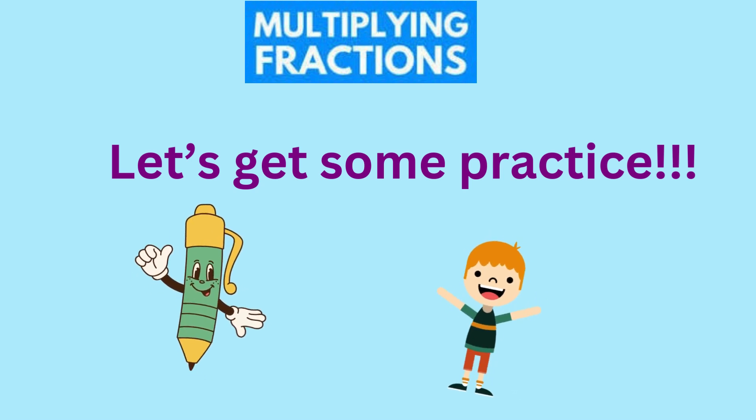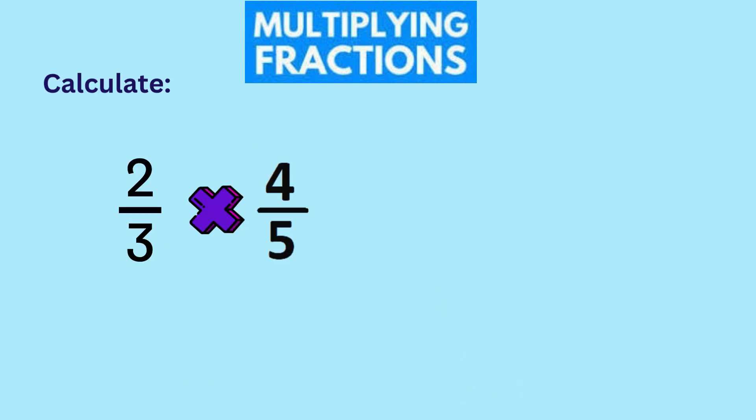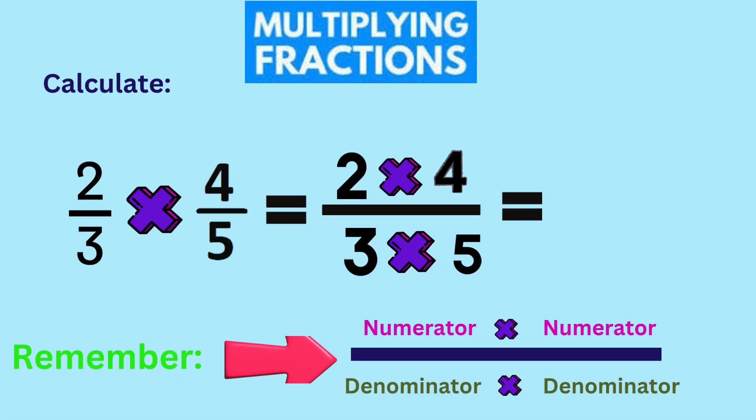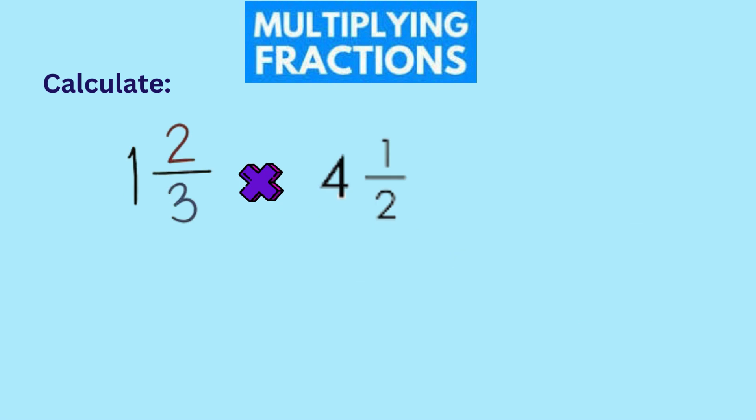Now, let's try two-thirds times four-fifths. The answer is two times four over three times five. This gives us eight-fifteenths. What is one-and-two-thirds times four-and-a-half?